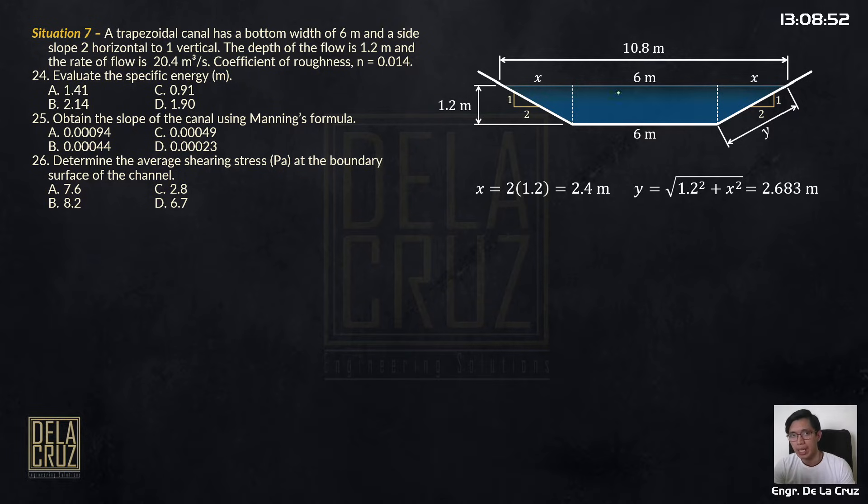Then I will solve the area of flow, that is a trapezoid. So that is equal to 1.2 over 2 times 6 plus 10.8, and that's 10.08 square meters.